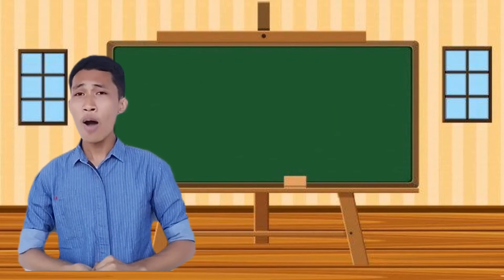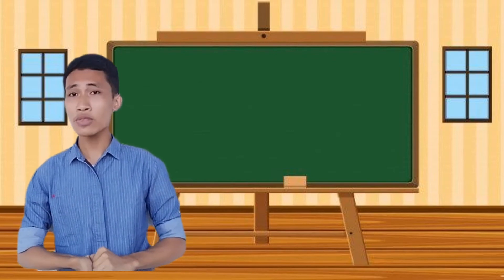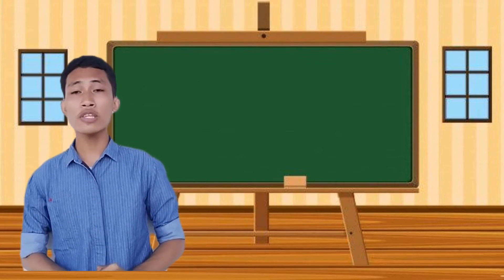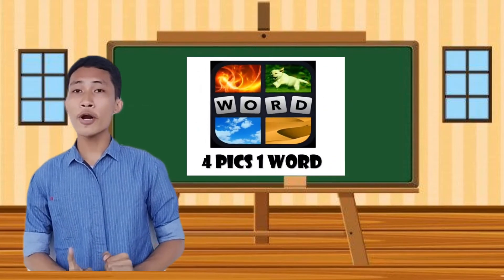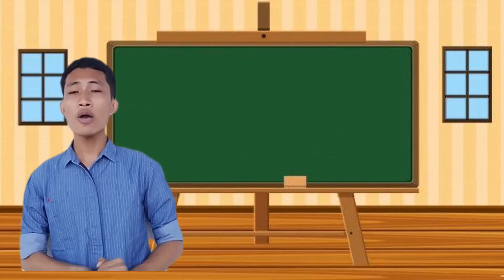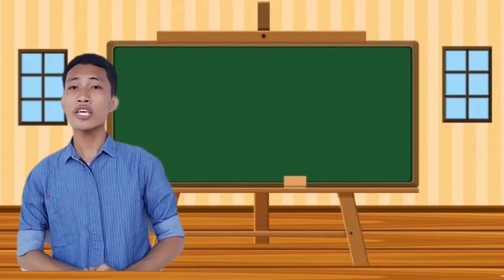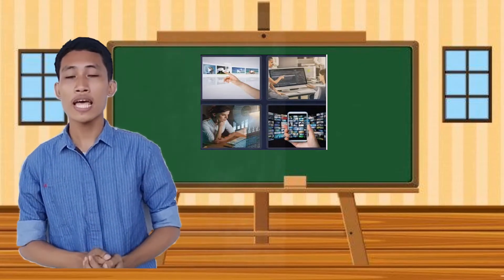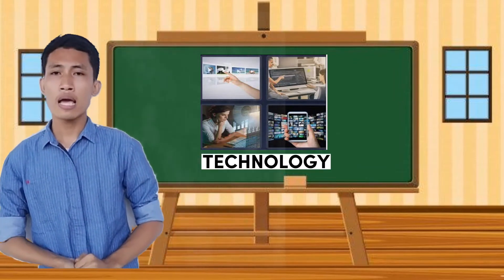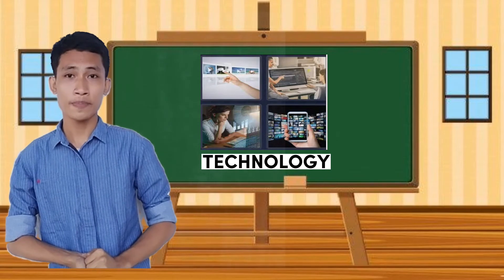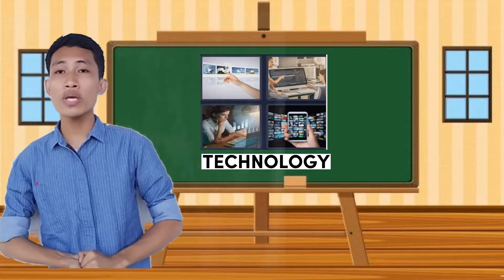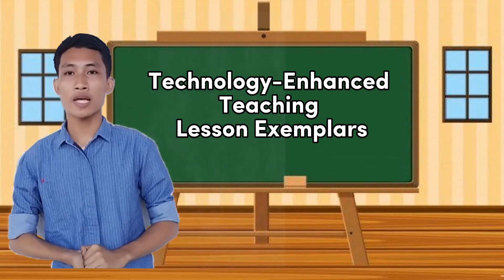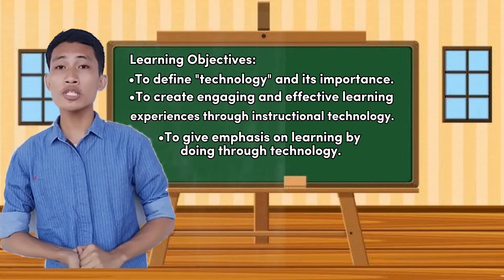All right! How are you doing today, class? Very good! That's great to hear. So, before we dive into our topic, let's have a quick exercise first. I know that you're very familiar with this game called Four Peaks, One Word. I want anyone from the class to guess the hidden word in these four pictures. Very good, Mr. Cornelio! Thank you so much! The hidden word is technology. It has something to do with what we are going to discuss today — technology-enhanced teaching lesson exemplars. And these are our learning objectives for today's discussion.